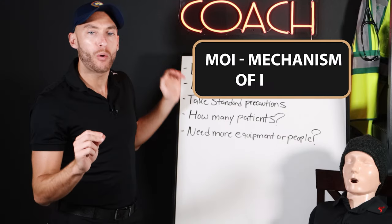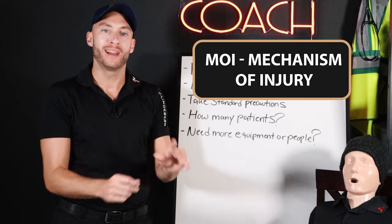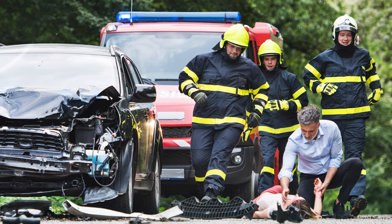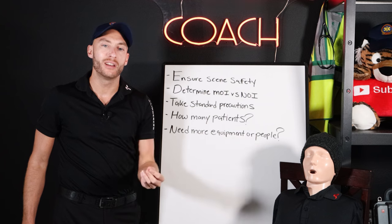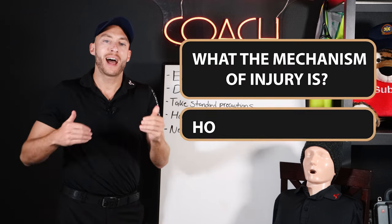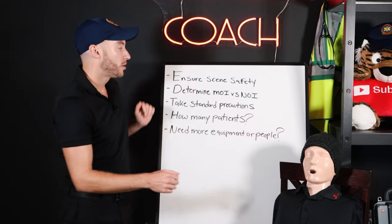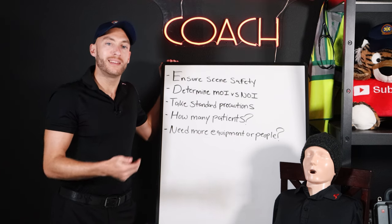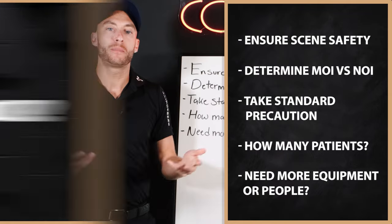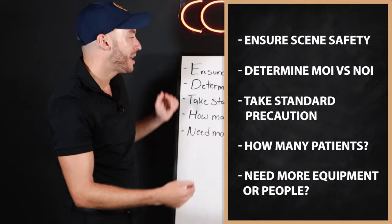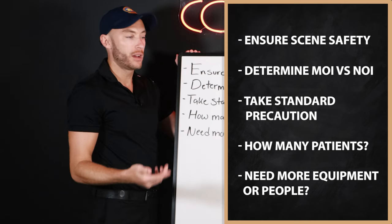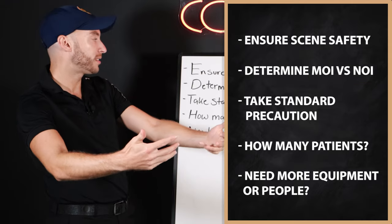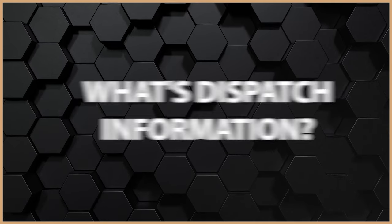MOI is the mechanism of injury — that's a traumatic call. So if someone's in a car accident or they fell, we make a determination of how that person got injured. The NOI stands for the nature of illness: why are they sick, what makes the patient complain today? That's on the medical side. You can also have a medical and traumatic call in one. We're trying to determine that as we do our scene size-up — what do we see, what's going on, what's the dispatch information?